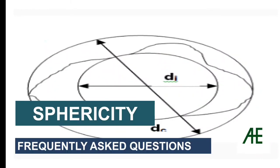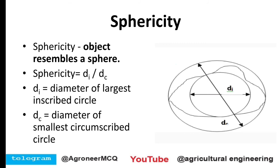Hi friends, welcome to our YouTube channel Agricultural Engineering. In the series of engineering properties of biological material, today we are going to discuss sphericity, which is a very important topic from an exam point of view. Sphericity is nothing but how much an object resembles a sphere — whether the object looks similar to a sphere is what we find in the case of sphericity.